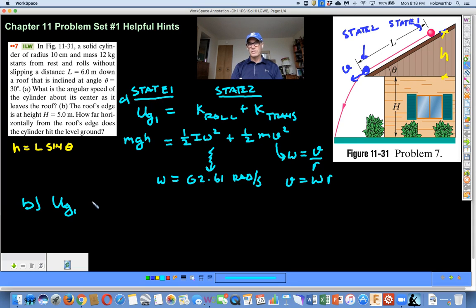We're going to start at state 1, which is gravitational potential energy. That's going to convert into kinetic energy of rolling plus kinetic energy of translation. And once again, one half I omega squared plus one half MV squared. So here's that MGH once again, H being L sin theta.